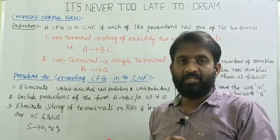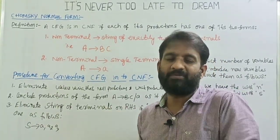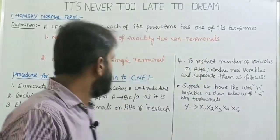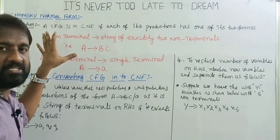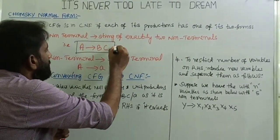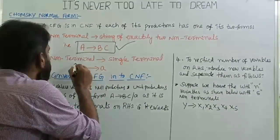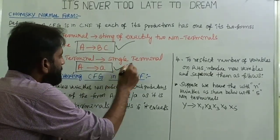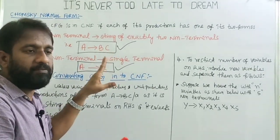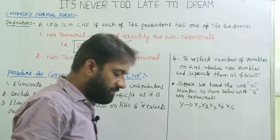Welcome back. Today's topic is the Chomsky Normal Form. As you know, last lecture we saw what is meant by a normal form, what are the types of normal forms — one is Chomsky Normal Form and another is Greibach Normal Form. Once again, let me define what is meant by Chomsky Normal Form. A context-free grammar is in Chomsky Normal Form if each production is of the form A → BC, meaning the RHS should contain exactly two non-terminals, or a production can contain exactly a single terminal. There is a strict restriction on the length of variables on the RHS part, limited to two only — that is what is called the Chomsky Normal Form.